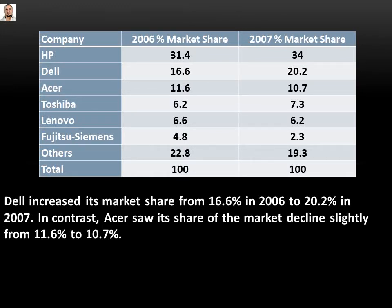Dell increased its market share from 16.6 percent in 2006 to 20.2 percent in 2007. In contrast, Asus saw its share of the market decline slightly from 11.6 percent to 10.7 percent. This paragraph follows the second paragraph, which was about HP, the main company.